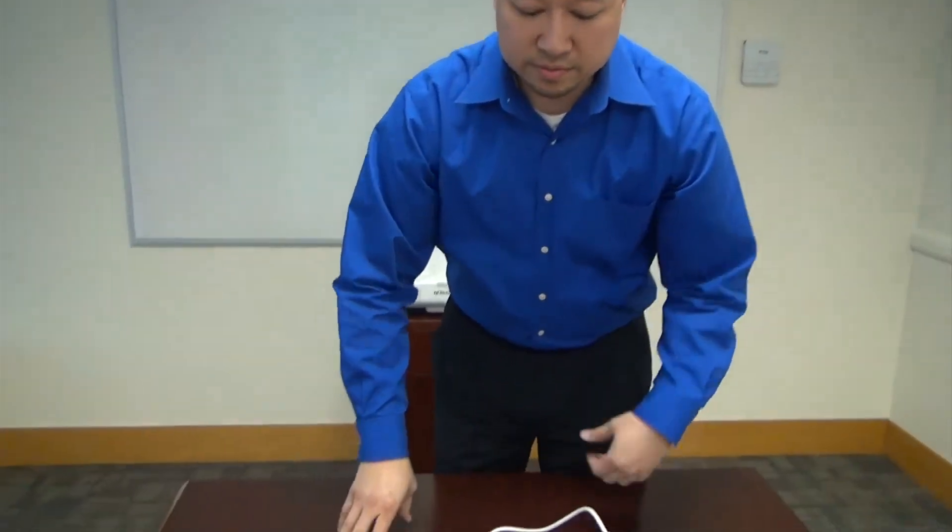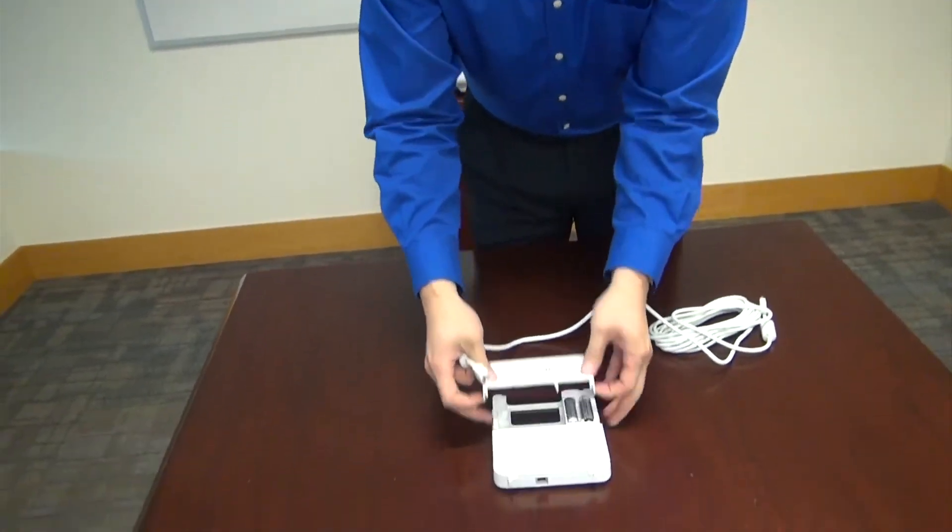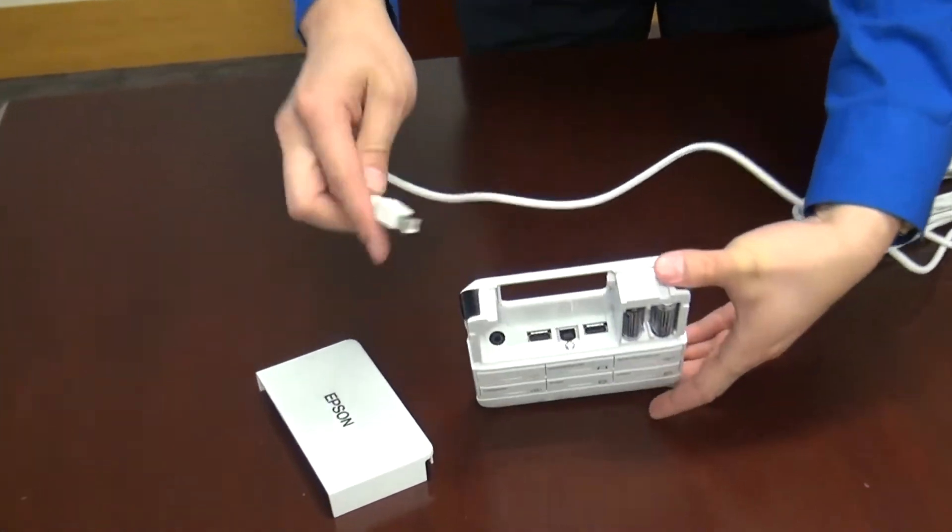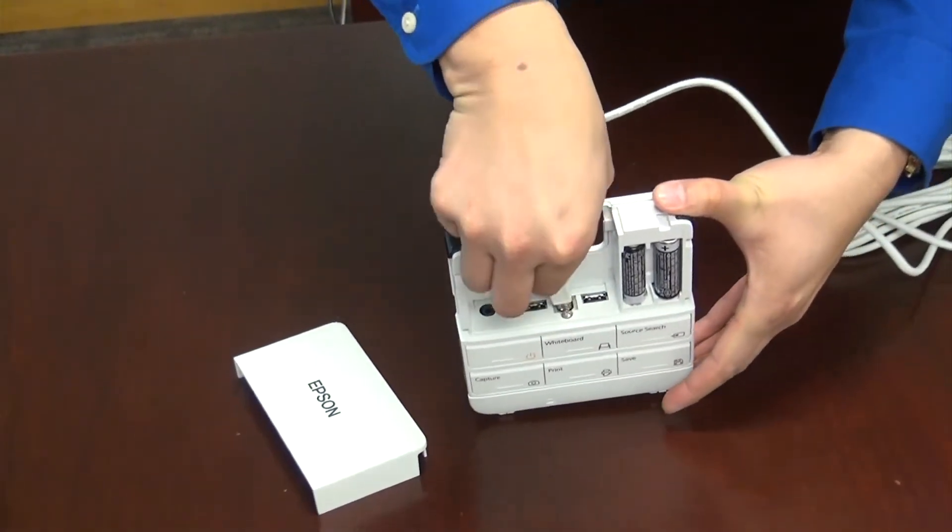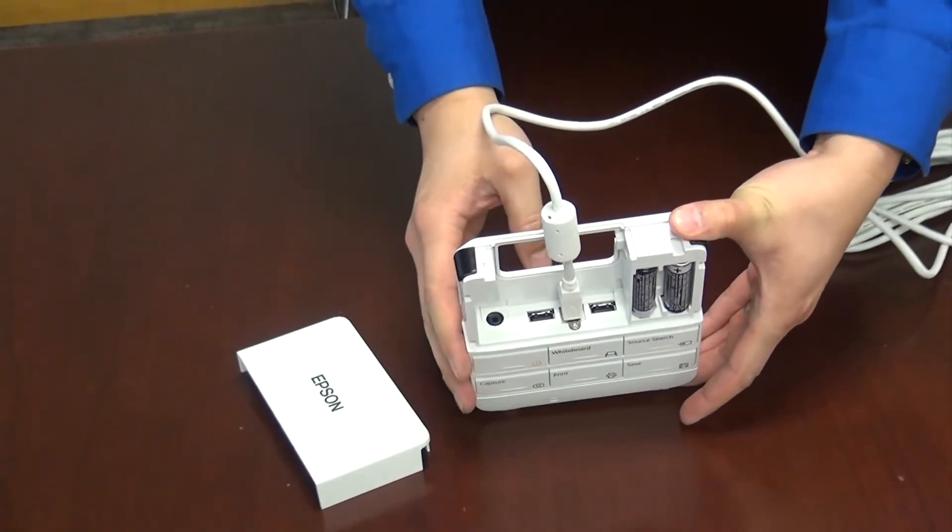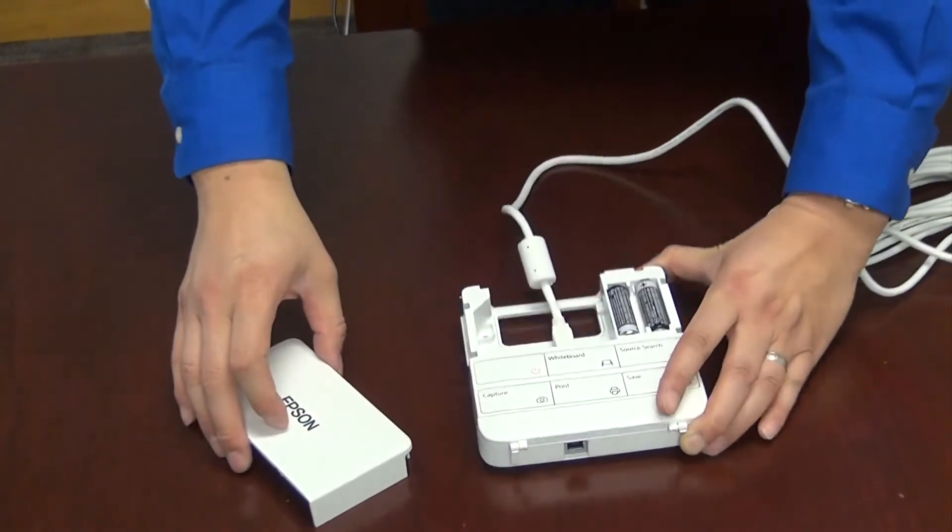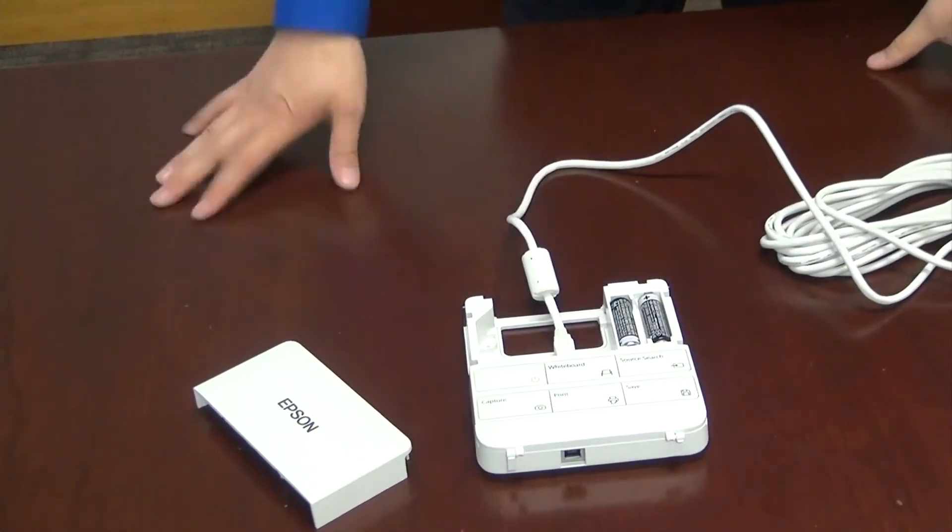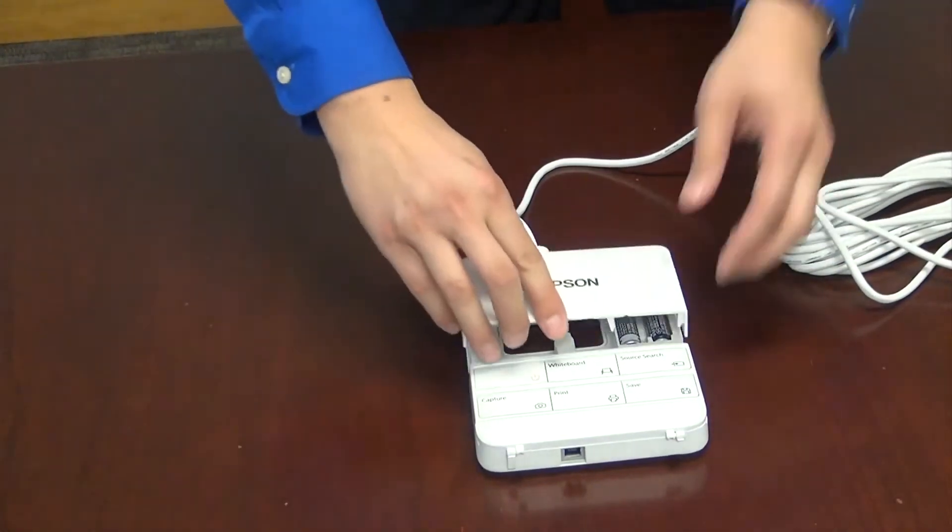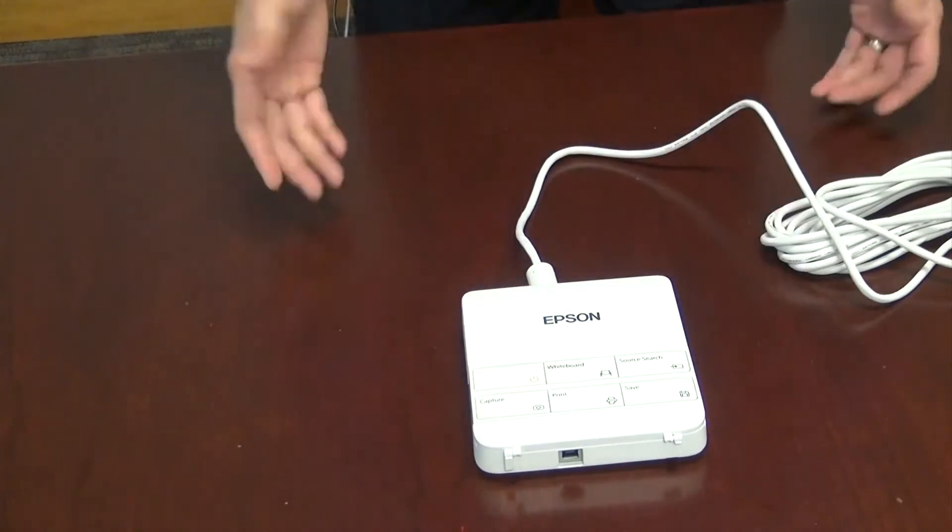Okay, now we're going to connect the other end of the USB cable to the control panel. Open up the control panel. Connect the USB cable into the USB-B port. Or, don't forget your batteries. Close it. You're good to go.